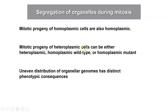To summarize: homoplasmic cells, when they undergo mitosis, produce only homoplasmic daughter cells. Heteroplasmic cells, when they undergo mitosis, can produce either heteroplasmic daughter cells, homoplasmic wild-type cells, or homoplasmic mutant cells.